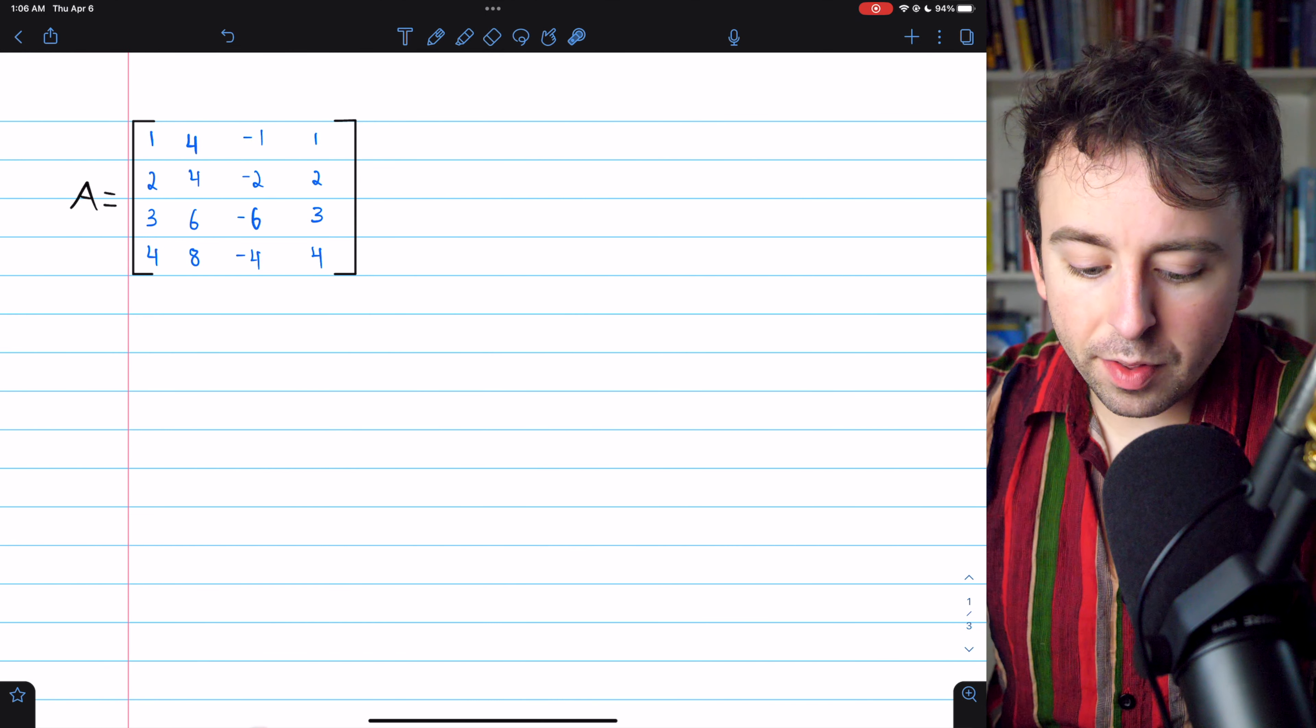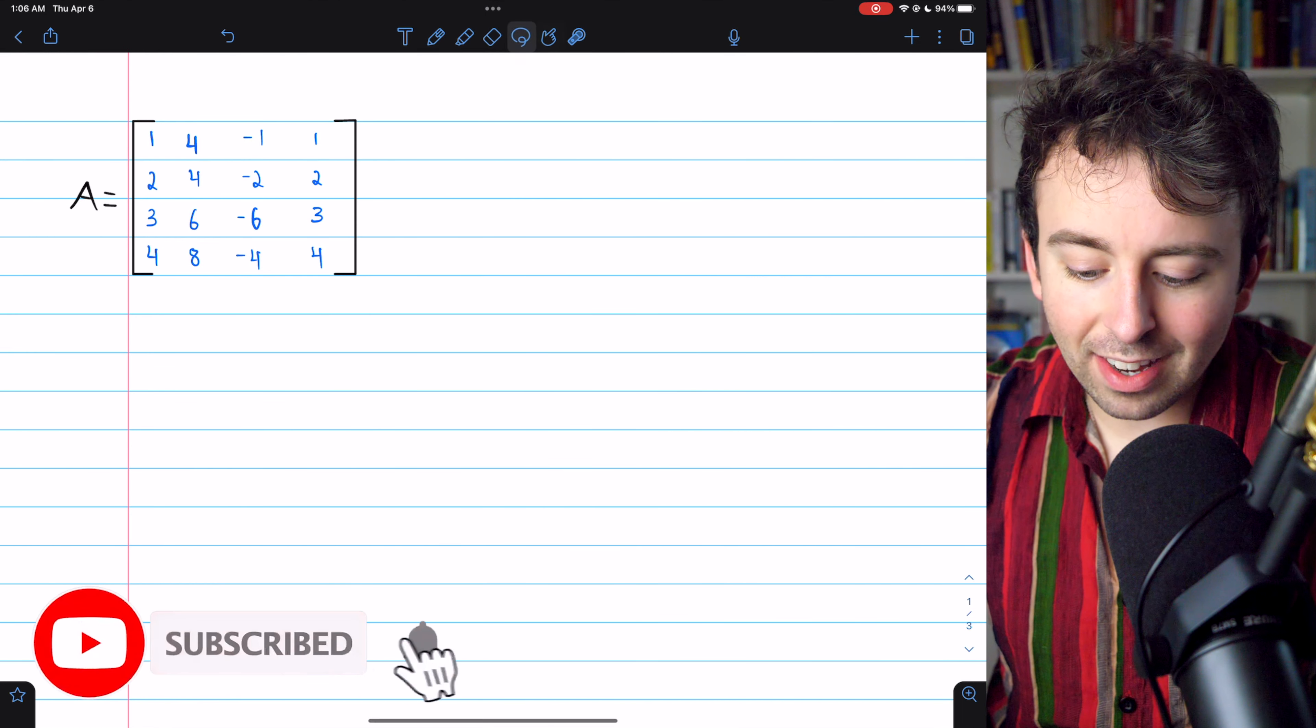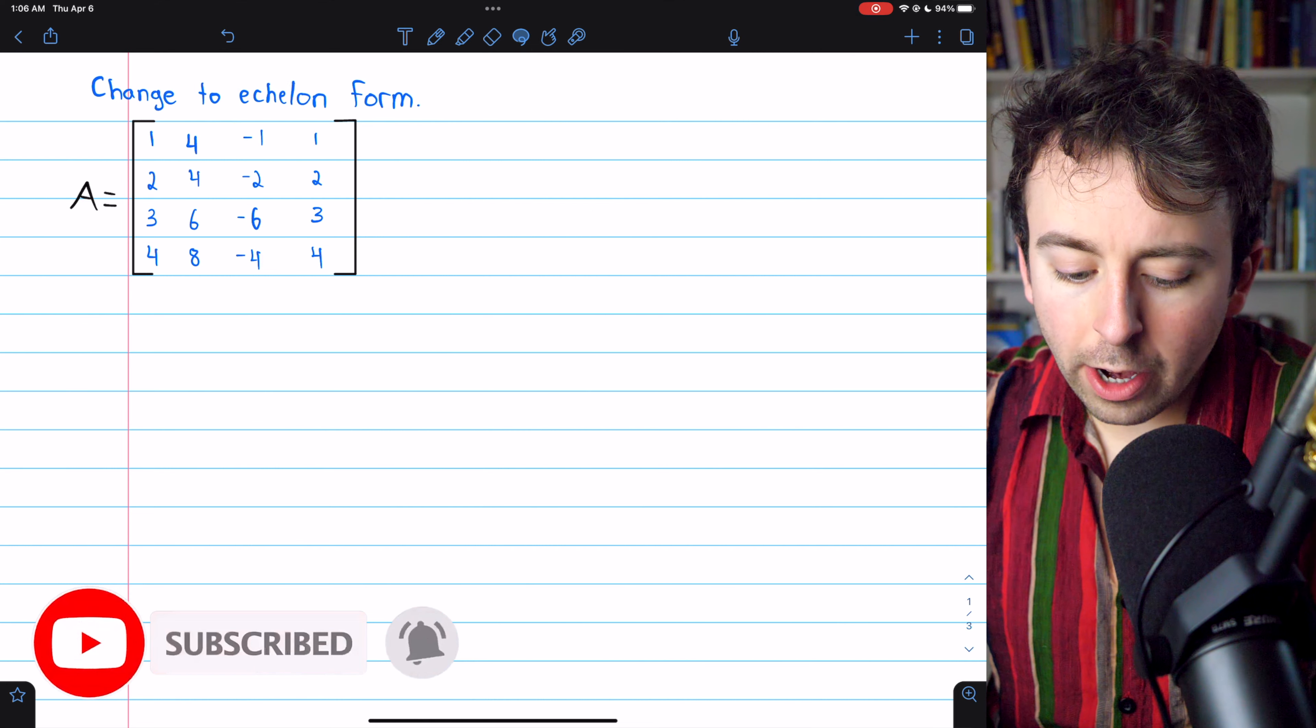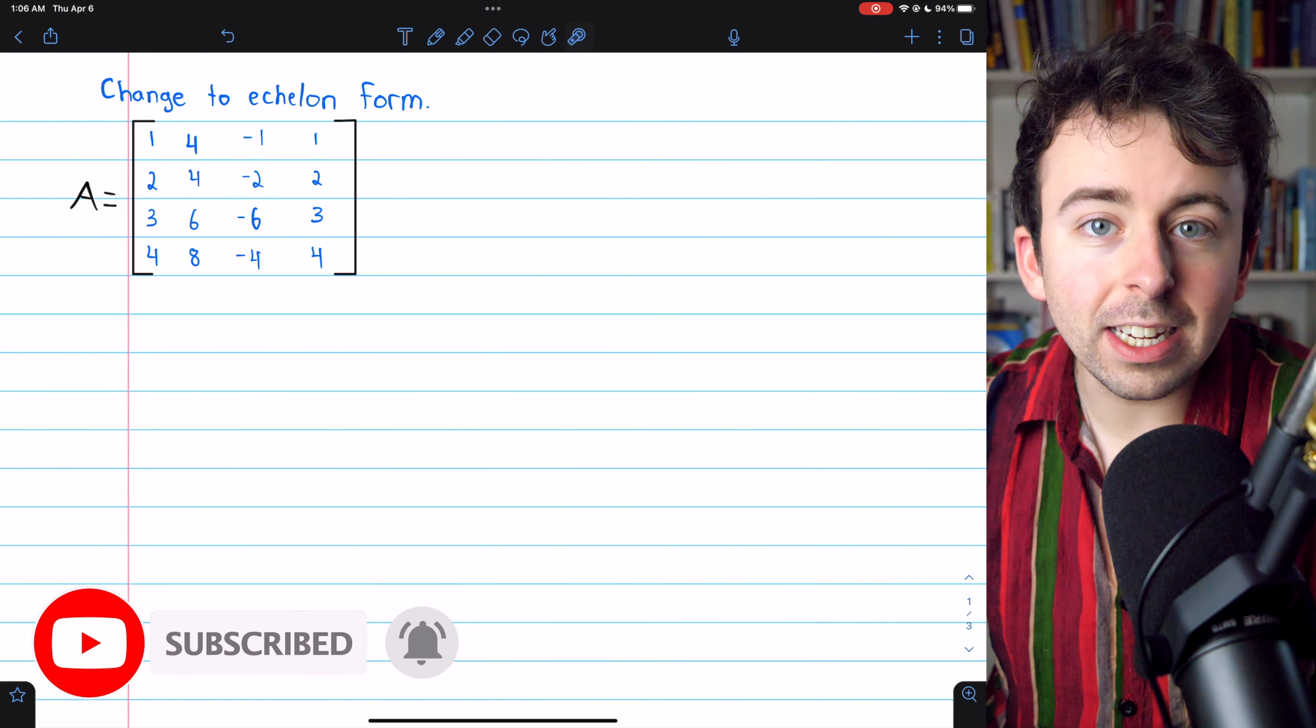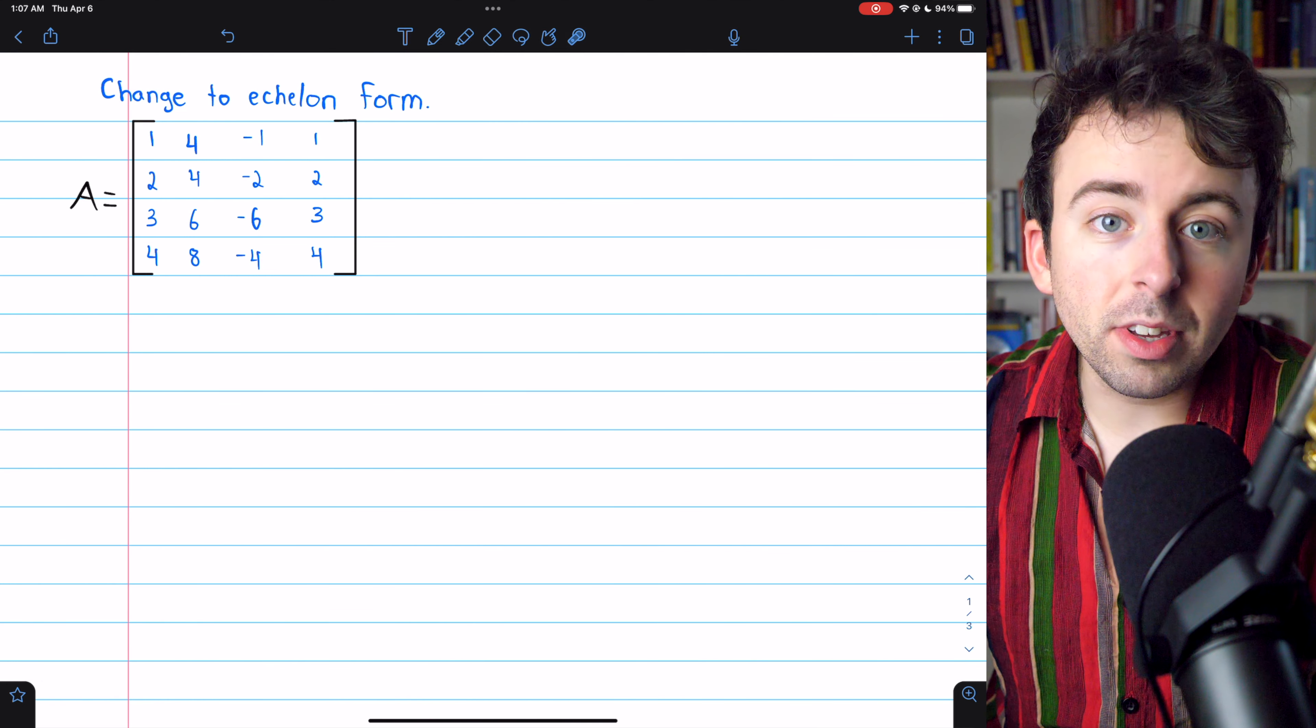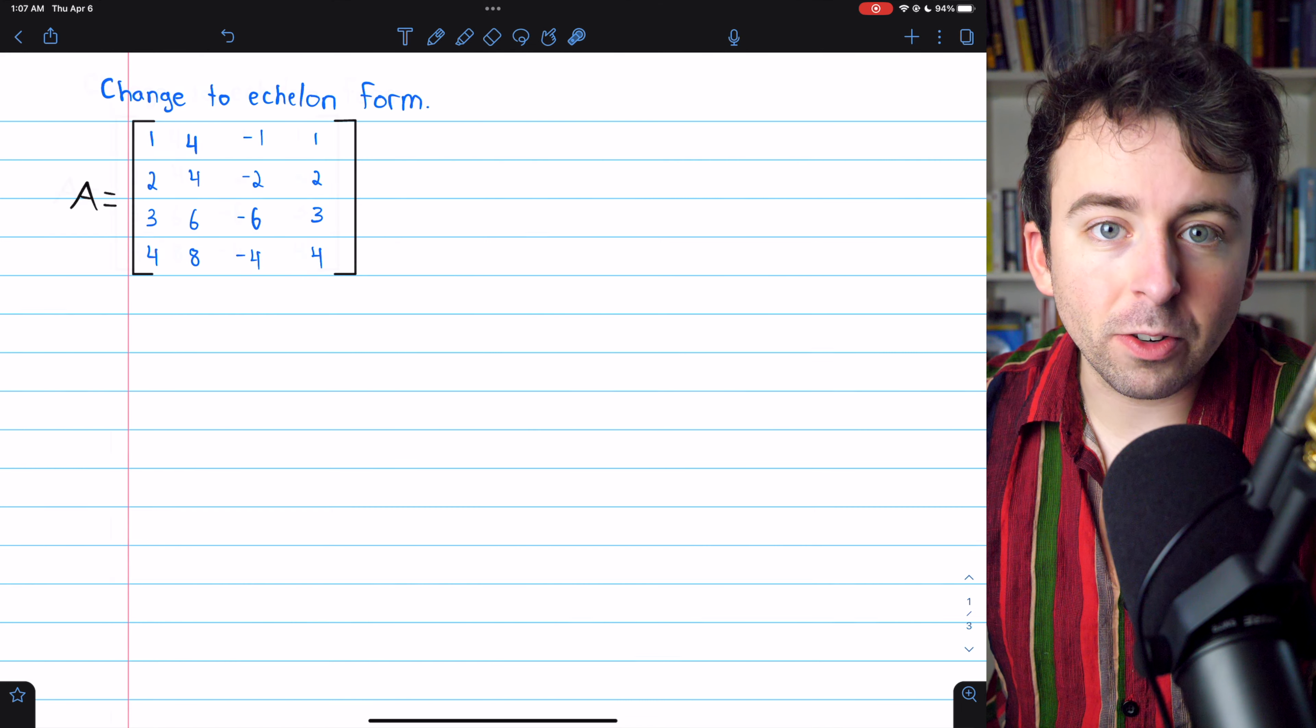We're going to find the rank of this 4 by 4 matrix A, and this is going to require us to change this matrix into echelon form using elementary row operations.